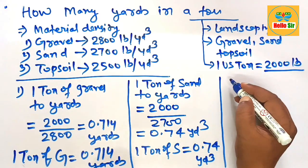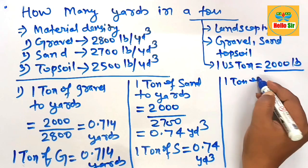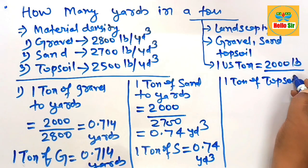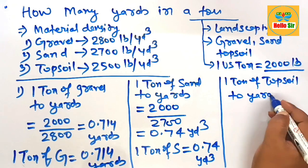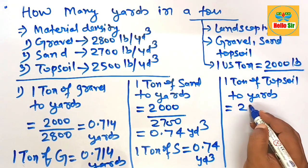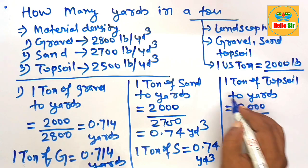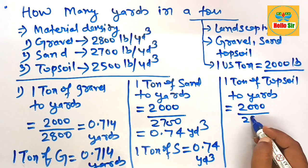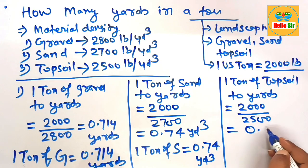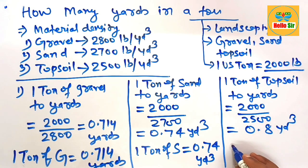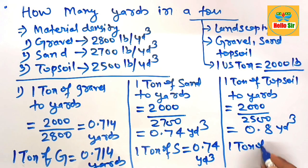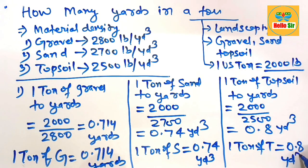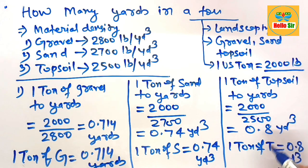Third, one ton of topsoil to yards: divide one ton — that is two thousand pounds — by the one-yard topsoil weight, which is twenty-five hundred. After division, this comes to about 0.8 cubic yards. One ton of topsoil is equal to 0.8 cubic yards. This is the number of yards in one ton of landscaping material like gravel, sand, and topsoil.